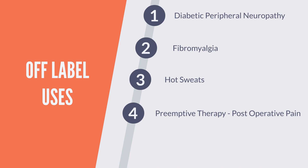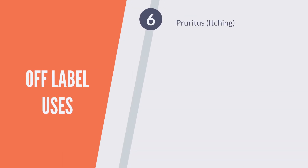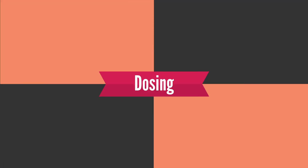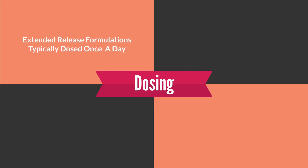Other off-label uses of gabapentin include fibromyalgia, hot sweats, and sometimes as a preemptive therapy in acute post-operative pain — given before surgery to prevent pain from occurring in the first place. Additional off-label uses include management of hot flashes due to menopause, pruritus (itching), restless leg syndrome, singultus (hiccups), and alcohol dependence.